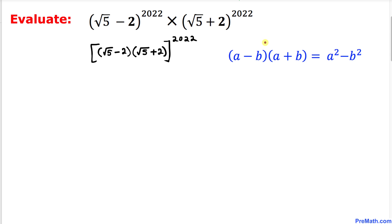Now we are going to use this formula: a minus b times a plus b, to multiply these binomials inside the bracket.